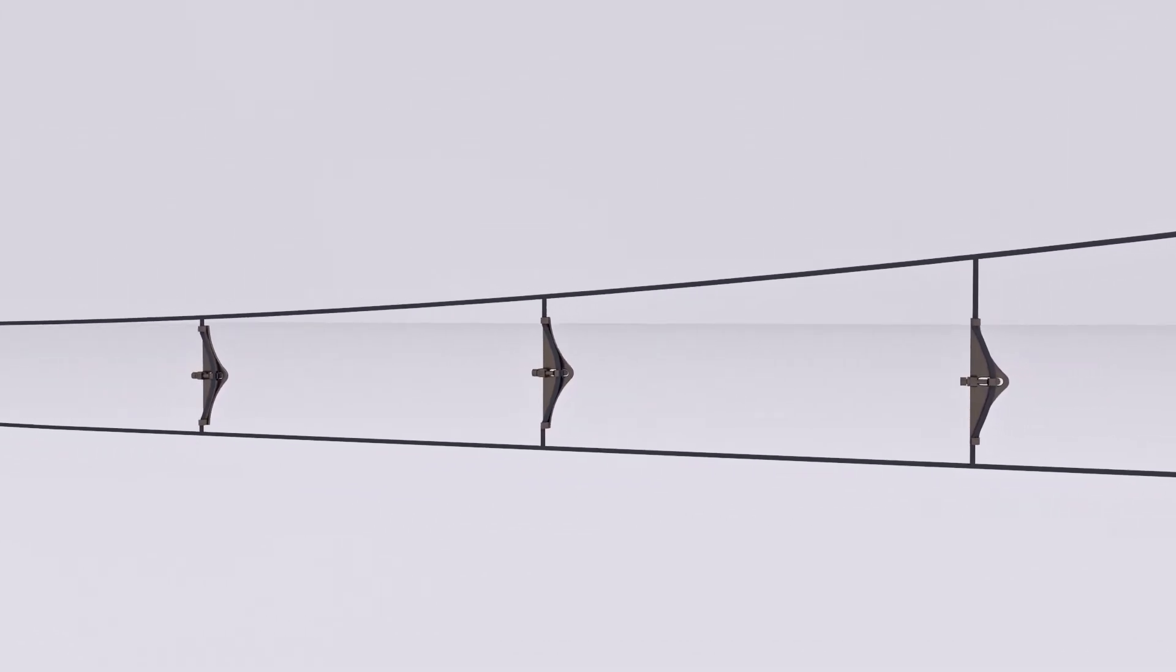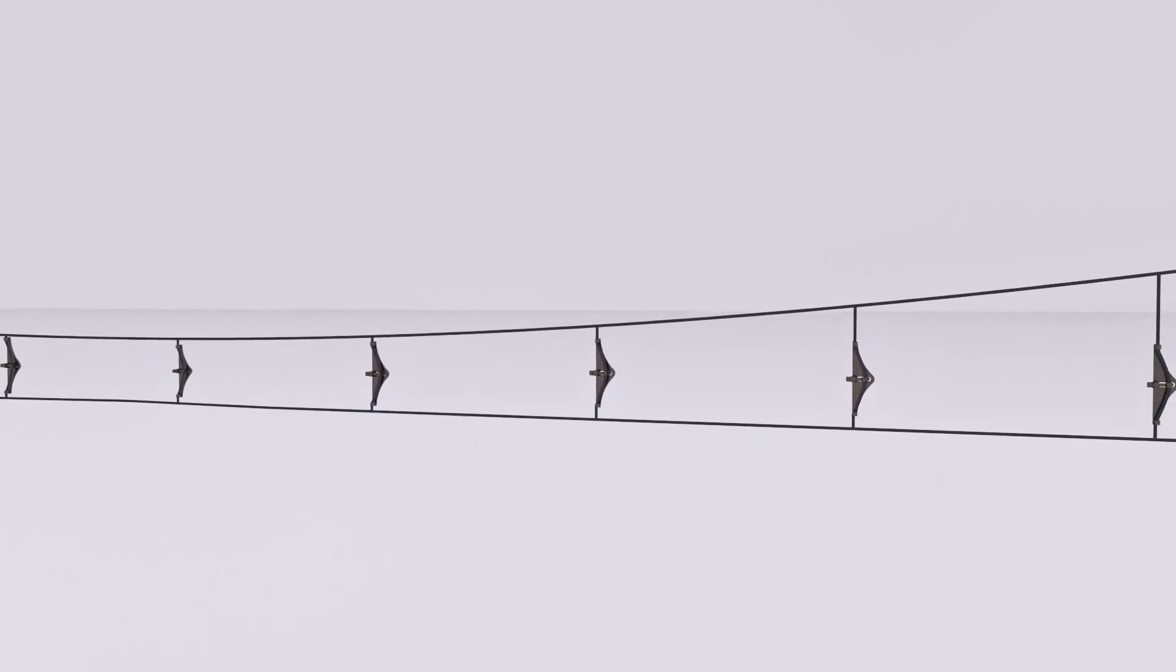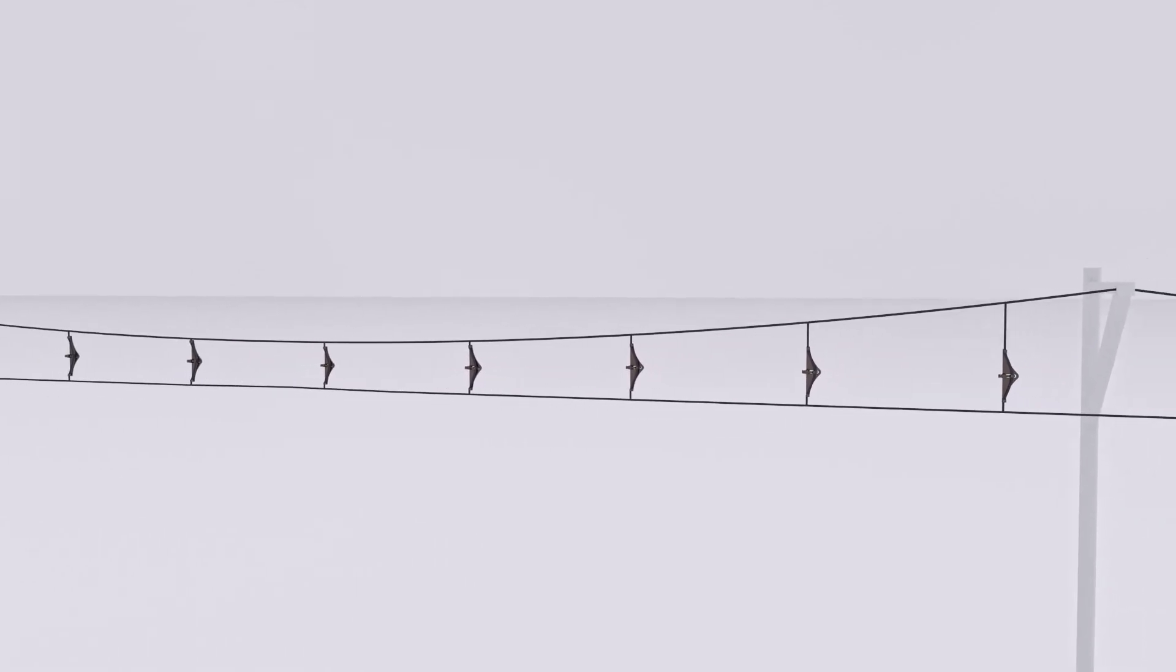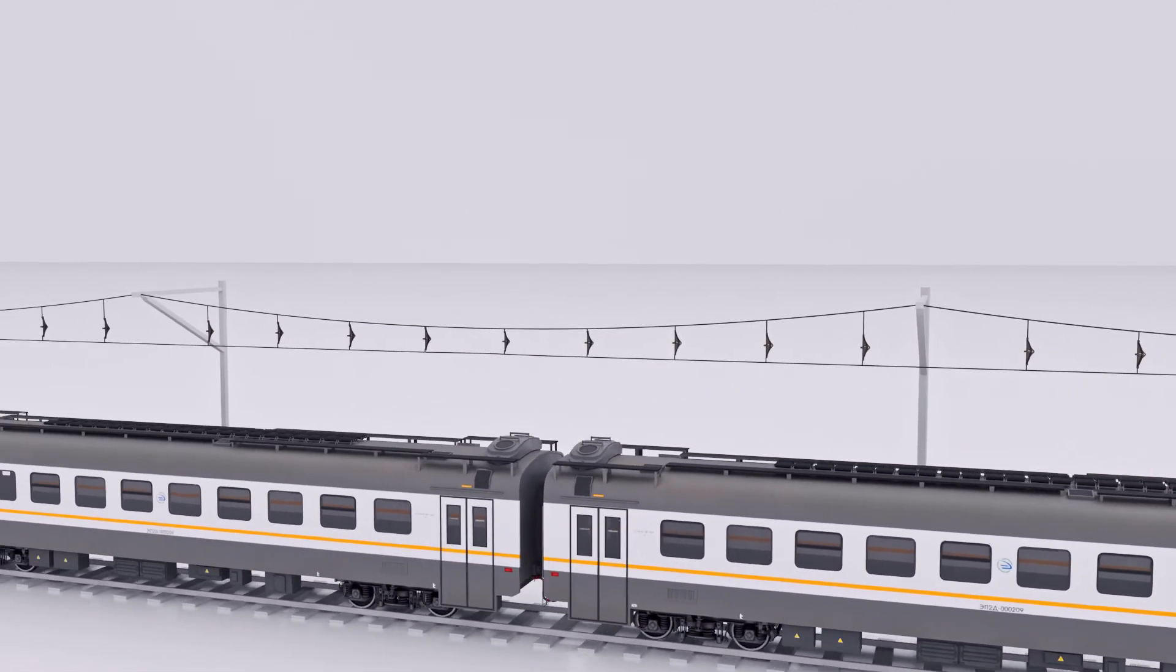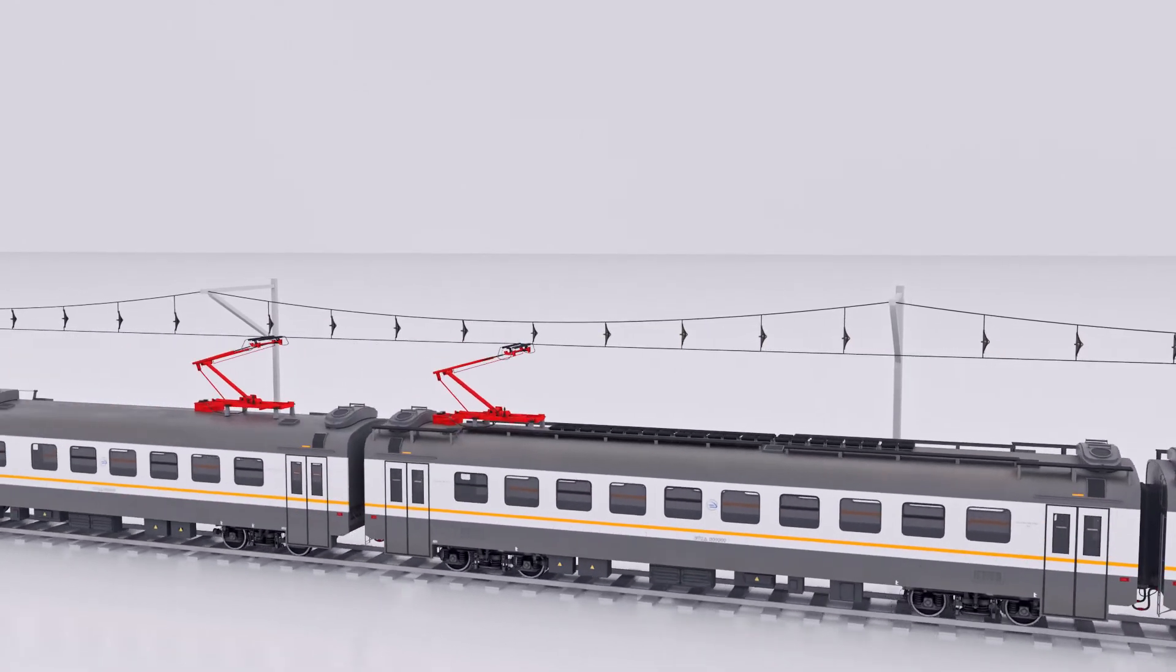Therefore, installing these fittings on the droppers not only helps to fix the contact wire's horizontal shape, but also improves the overhead catenary dynamic behavior. This improvement is even more effective in cases of multi-pantograph interaction.